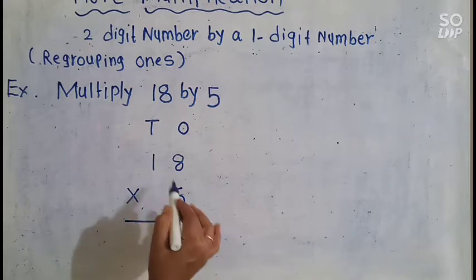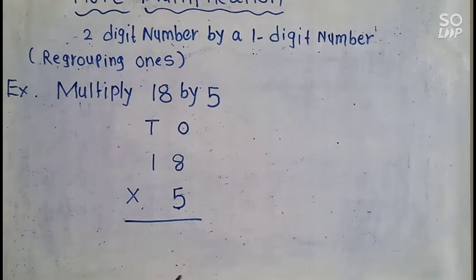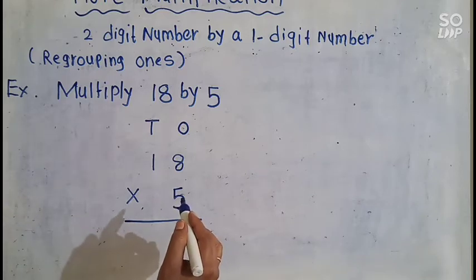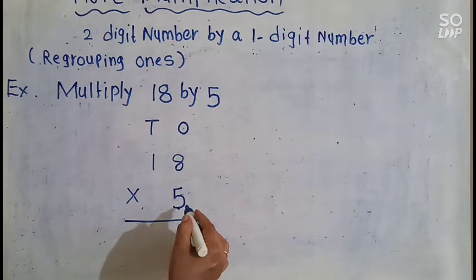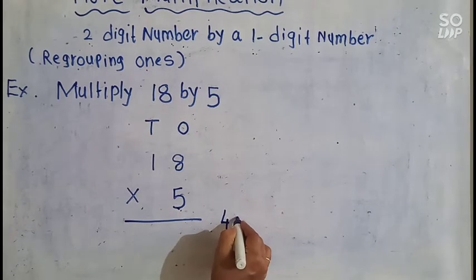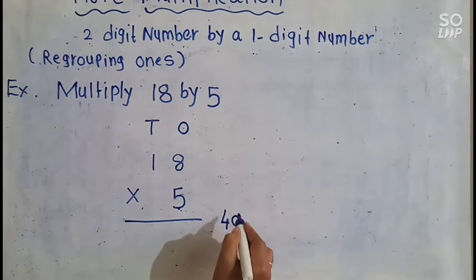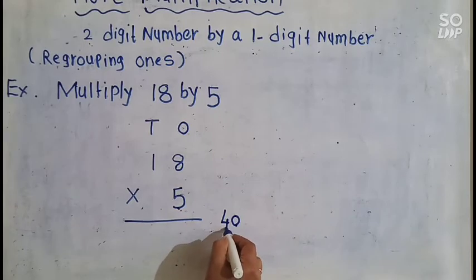Let's go through the 5s table up to 8: 5 1s are 5, 5 2s are 10, 5 3s are 15, 5 4s are 20, 5 5s are 25, 5 6s are 30, 5 7s are 35, 5 8s are 40. Look here — 5 8s are 40, which is a 2-digit number: 0 ones and 4 tens.